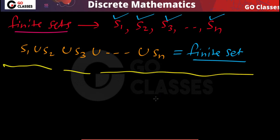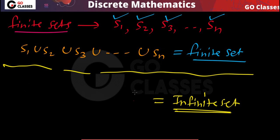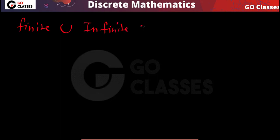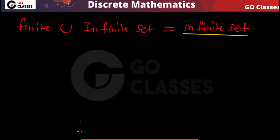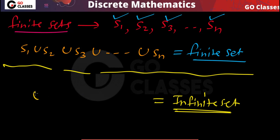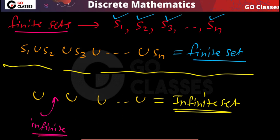So if you want the result to be an infinite set, you cannot have all finite sets. If all of them are finite, the result will be finite. So you need at least one infinite set. Because finite set union infinite set is definitely an infinite set — combining all elements, since one set has infinitely many elements, the result is infinite. So at least one infinite set must be present.